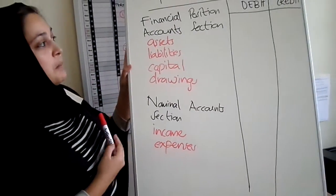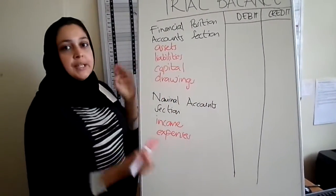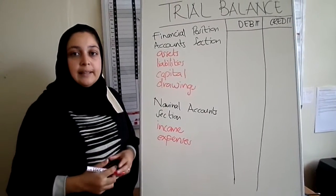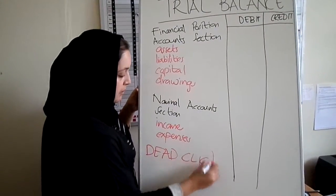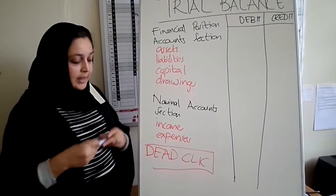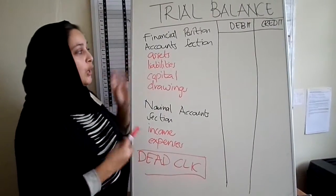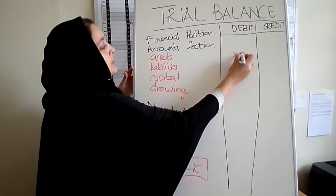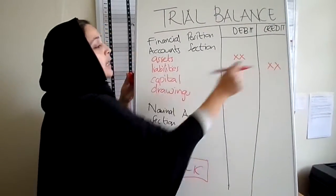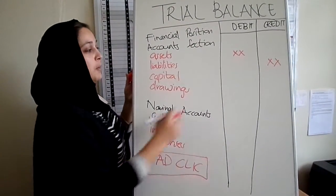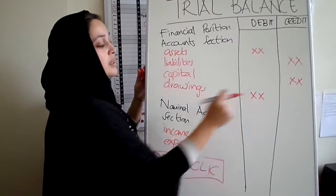Another thing to remember is on which side the amounts go. If you have an asset, does it go on the debit or the credit side? You use your DEAD CLIC rule. DEAD CLIC is something you need to remember when doing the trial balance as well — you can watch the video on the ledger accounts to understand what it means. All your assets will have balances on the debit side, all your liabilities on the credit side, your capital on the credit side, and your drawings total on the debit side.